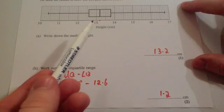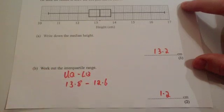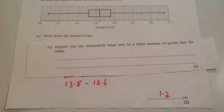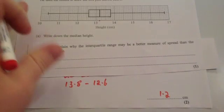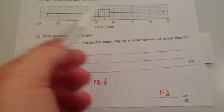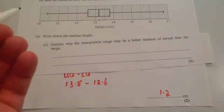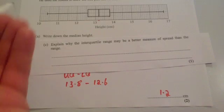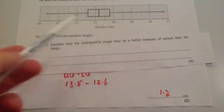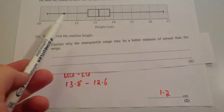That means the middle 50%, the spread of them is 1.2. The last part of that question says explain why the interquartile range may be a better measure of spread than the range. The range is affected massively by outliers because you're including every single value.